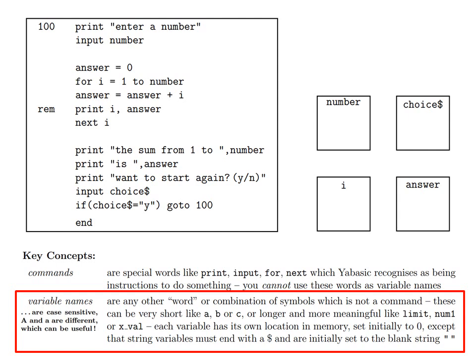For example, in this very simple program, the variable names are number, answer, i, and choice$. Each variable has its own location in memory, set initially to zero, except that string variables must end with a dollar sign and are initially set to the blank string.